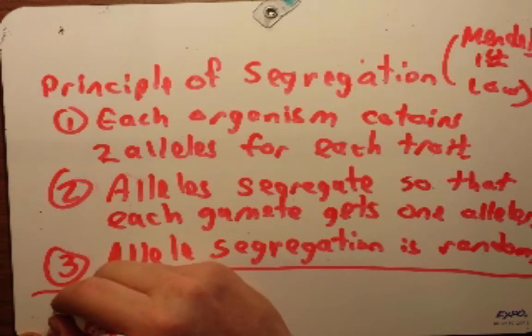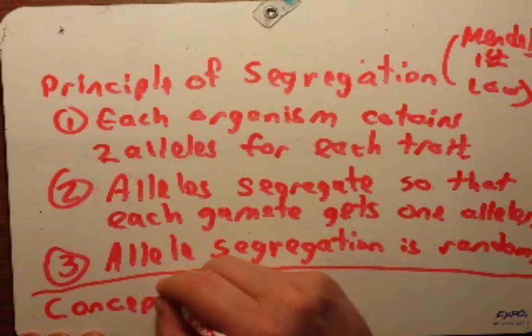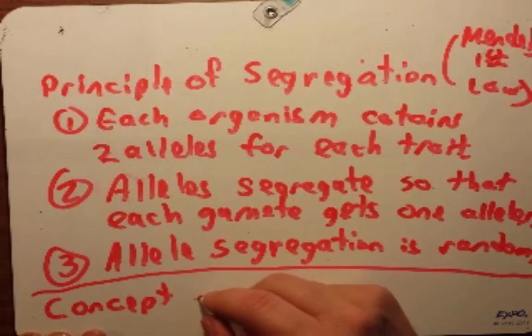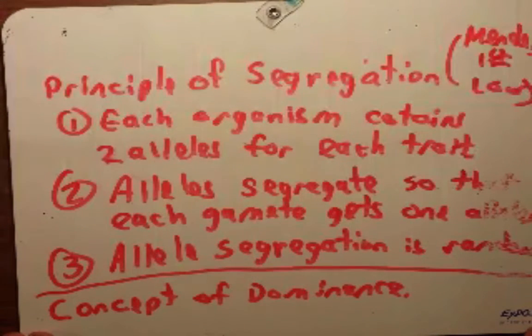Not directly linked to this principle of segregation, he also came up with, which was our third conclusion, this concept of dominance. This concept of dominance was, as we said before, only the dominant allele is observed as a phenotype. Any recessive alleles that are there are masked. So this is Mendel's principle of segregation.